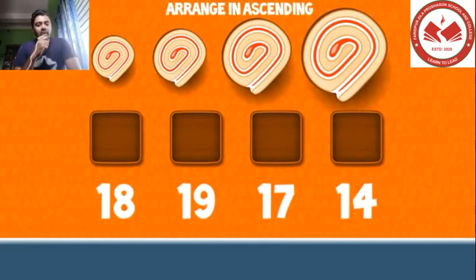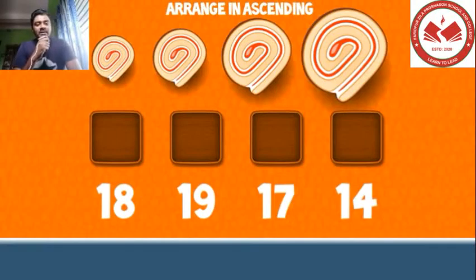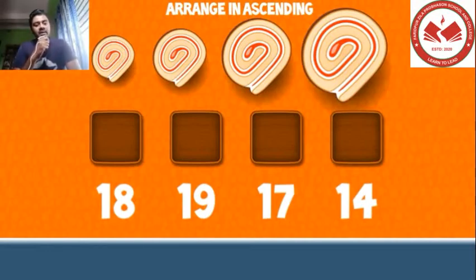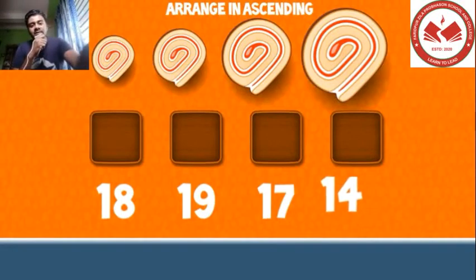We have got another series to complete. In this series we can understand that this has to be arranged from smaller to greater numbers. The smallest number here is 14, so we can put 14 in the first box to complete the series.